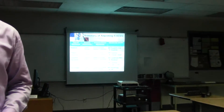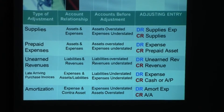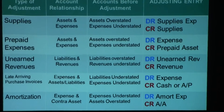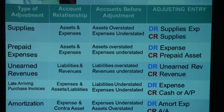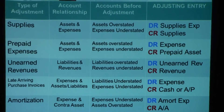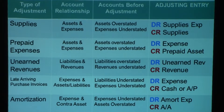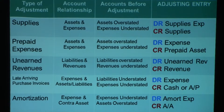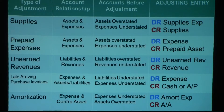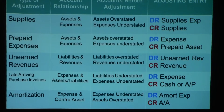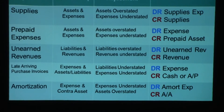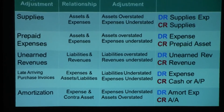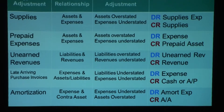To briefly summarize all five adjusting entries — this slide is a critical reference. Supplies: debit Supplies Expense, credit Supplies. Prepaid expenses: debit the relevant expense (e.g., Rent Expense or Insurance Expense), credit the prepaid asset (e.g., Prepaid Rent or Prepaid Insurance). Unearned revenues: debit Unearned Revenue, credit Revenue. Late-arriving purchase invoices: debit the type of expense (phone, internet, etc.), credit Cash or Accounts Payable. Amortization: debit Amortization Expense, credit Accumulated Amortization. Please refer to this slide whenever needed.